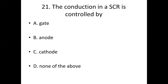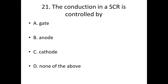Question 21: The conduction in an SCR is controlled by? Option A: gate. Option B: anode. Option C: cathode. Option D: none of the above. Answer: Option A — gate.